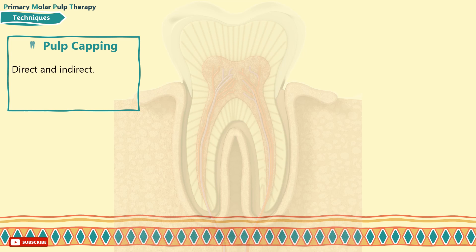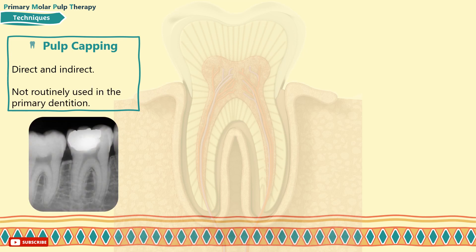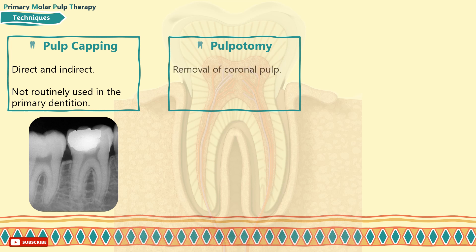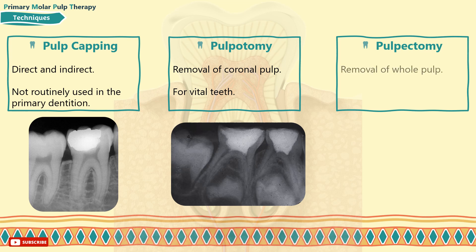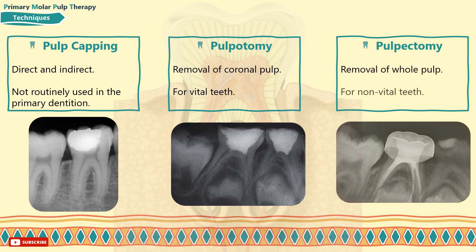The direct pulp cap is not routinely used in primary dentition due to poor outcomes. 2. Pulpotomy — it is the removal of the coronal pulp tissues only. This can be performed only on vital teeth, but the technique can differ in respect of choice of medicament and number of visits required. 3. Pulpectomy — it is the removal of the entire coronal and radicular pulp tissues. This can be used for non-vital teeth with or without signs of infection. Complete removal of the pulp is followed by obturation with a resorbable material, not to interfere with root resorption and permanent successor eruption.